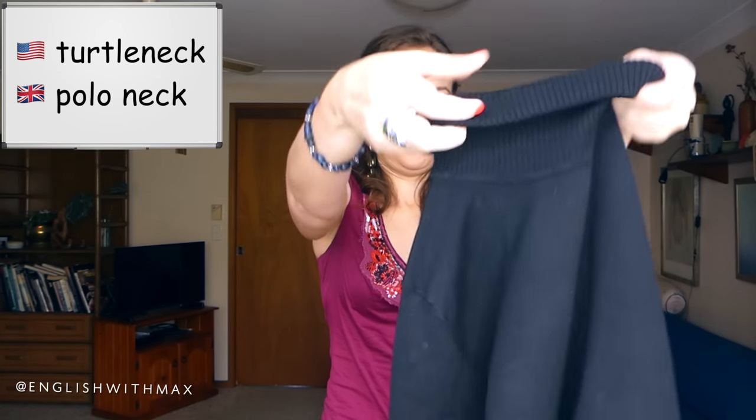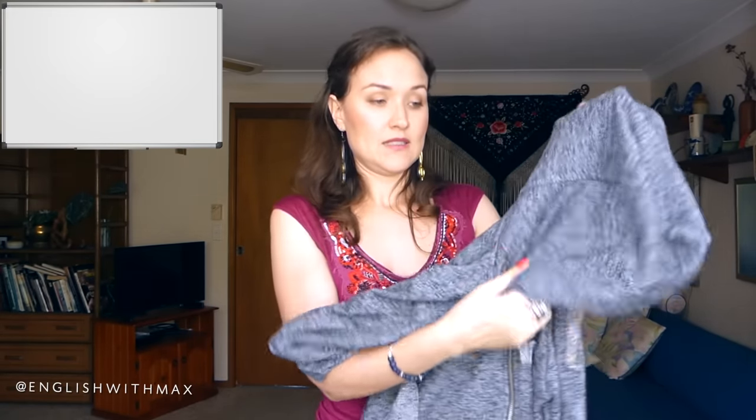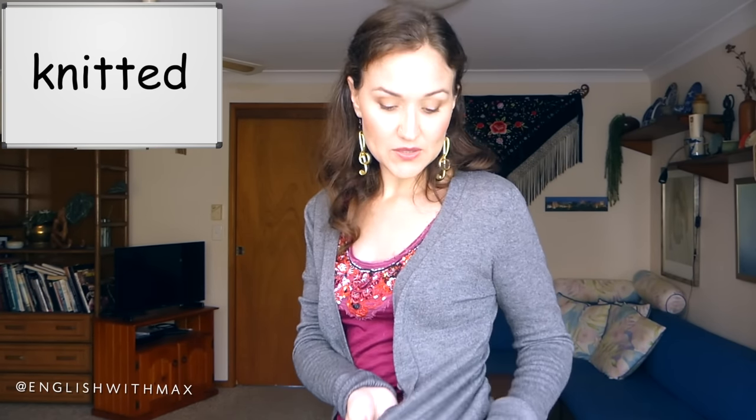In American English, this here is called a sweater. In British English, it's called a jumper. If you have a jumper or sweater that has a hood, then it's called a hoodie. The hood itself — this part here — is called a hood. This here is a cardigan. A cardigan usually has buttons down the middle and is usually made of knitted fabric.